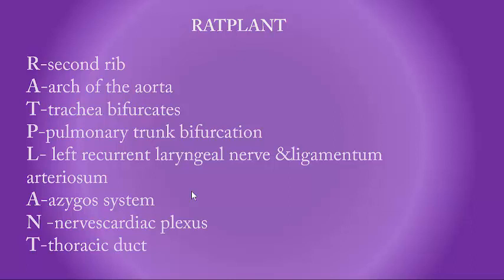T is for trachea bifurcation at the angle of Lewis. P is for pulmonary trunk bifurcation. L is for the left recurrent laryngeal nerve, which loops around the arch of aorta, and the ligamentum arteriosum, which is a remnant structure connecting the arch of aorta and the pulmonary trunk. Then there is the azygous system of veins — the azygous vein drains into the superior vena cava.